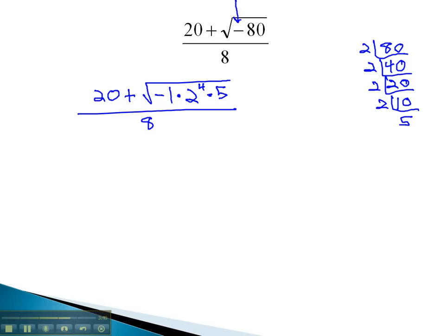Now, we can simplify the square root by dividing the exponent by the index. 4 divided by 2 tells us that two 2's must come out. The square root of negative 1, again, we know, is i. Now, we have 20 plus 2 squared, or 4i, square root of 5, over 8.